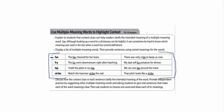The author presents us four words. Fan — the fan cheered for her team, so fan means somebody supporting a team. Another definition: there was only a fan to keep us cool — a device. Two different meanings. The word fry: the fry swim downstream right after hatching — so fry must mean a type of fish. Another use: my dad will fry potatoes for dinner — a method used for cooking.